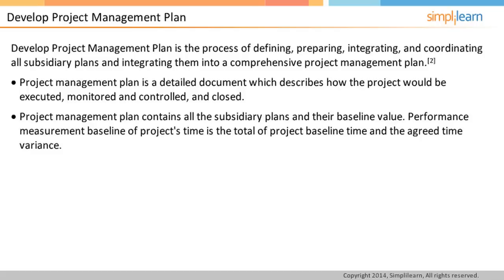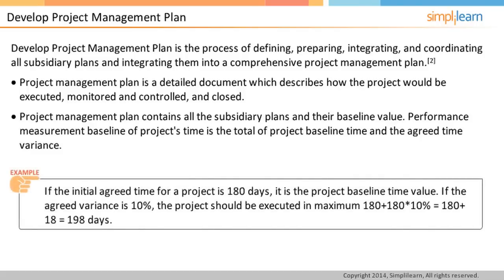Performance measurement baseline of project's time is the total of project baseline time and the agreed time variance. For example, the time management plan section would have mentioned the time taken by a project as 180 days — this 180-day period is called the baseline time value. Therefore, the baseline value is the initial agreed value in the project management plan. So if the time variance agreed in the plan is 10%, the project should be executed in maximum 180 plus 18, which is 198 days.